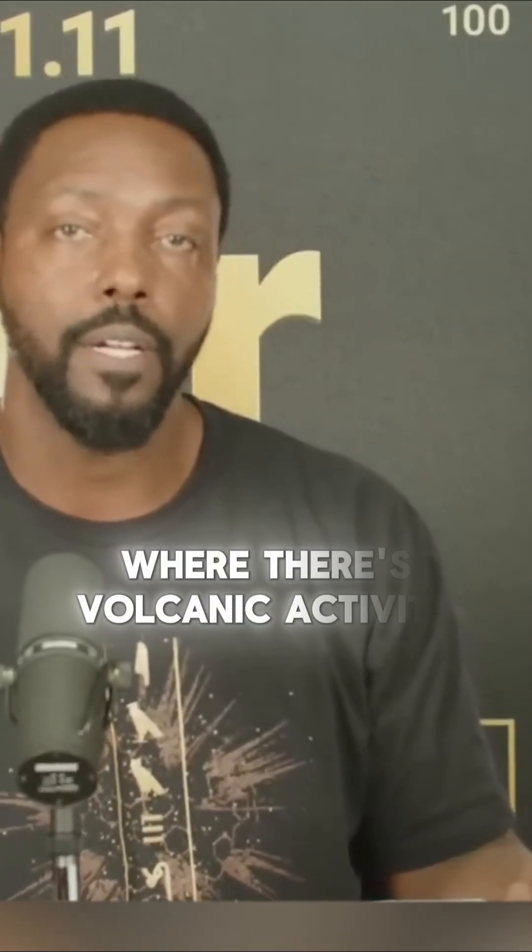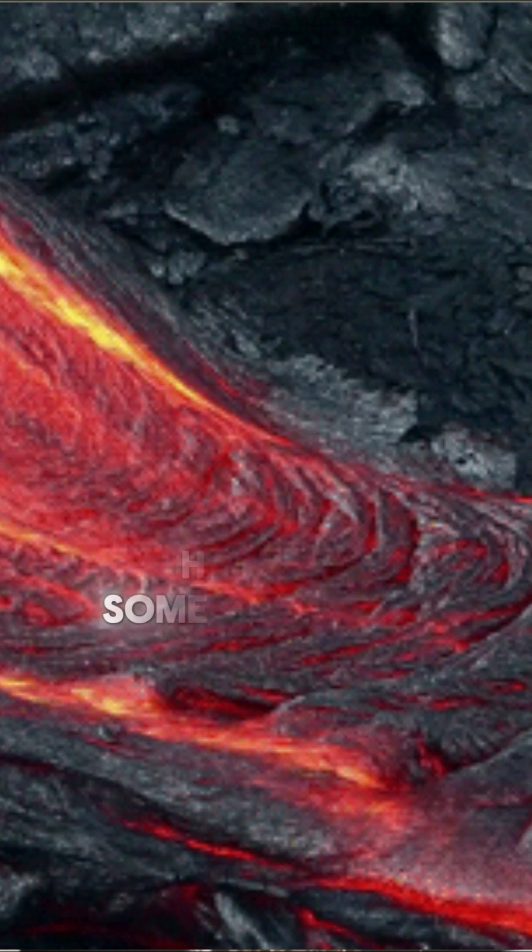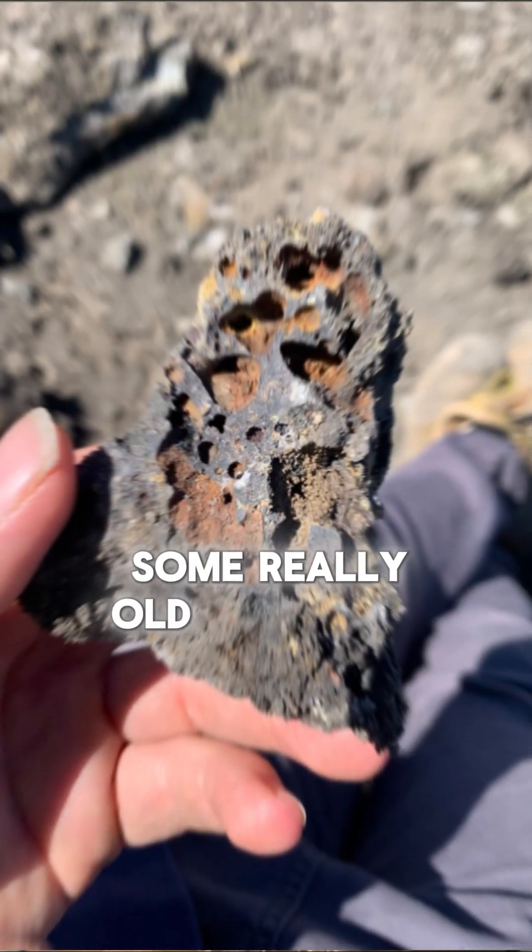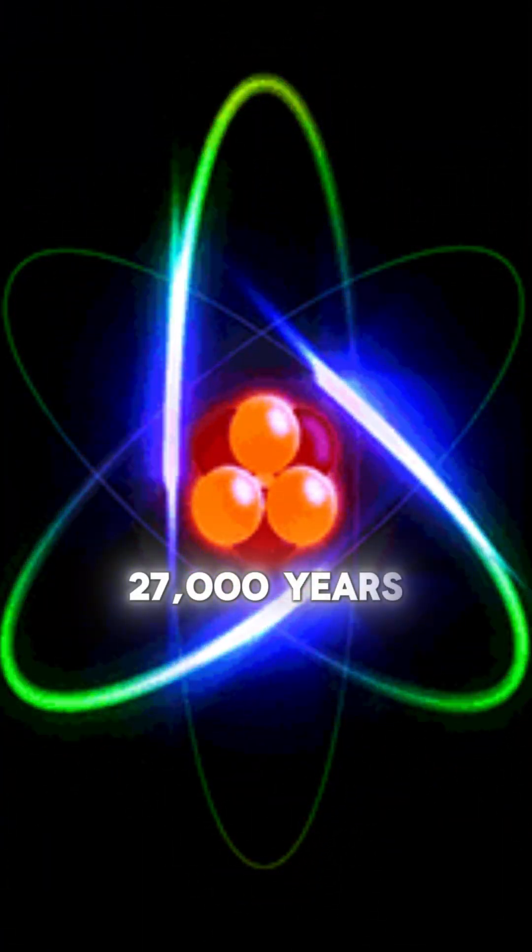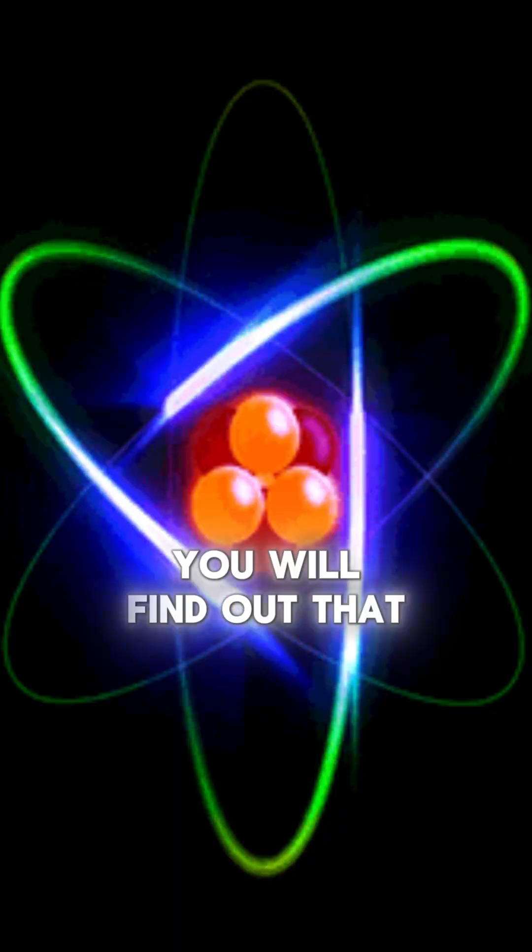Right now, if you go out to any area where there's volcanic activity and you can get your hand on some volcanic rocks, some really old volcanic rocks, and you take those rocks and check the position or the orientation of the atoms, if they're more than 27,000 years old, you will find out that the atoms are oriented opposite.